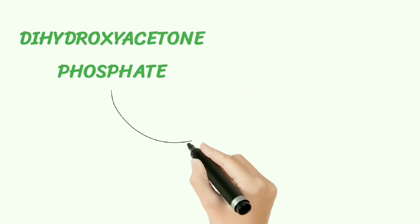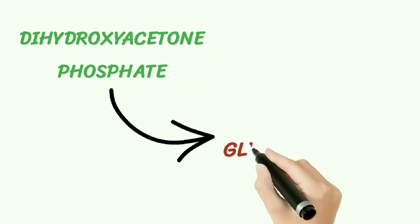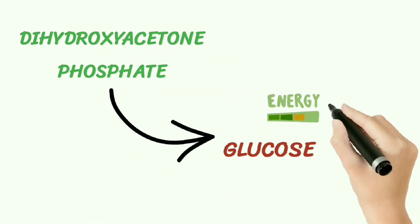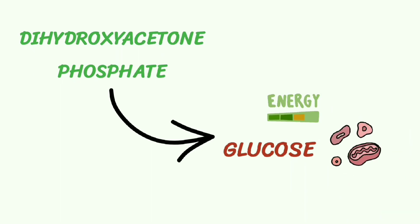Dihydroxyacetone phosphate can be used to form glucose, which is the major source of energy for our body cells.